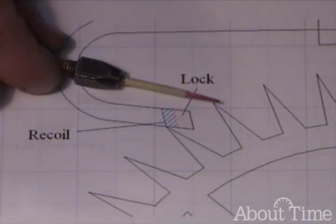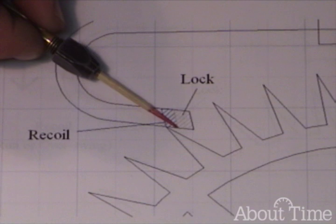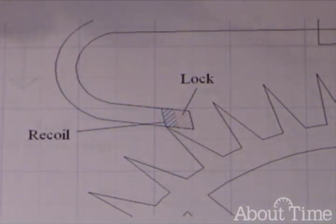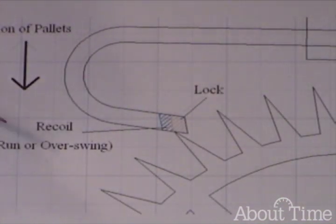and then the pallets rock forward, that it will push the escape wheel backwards. This will load up the escapement, give it a little bit of power.